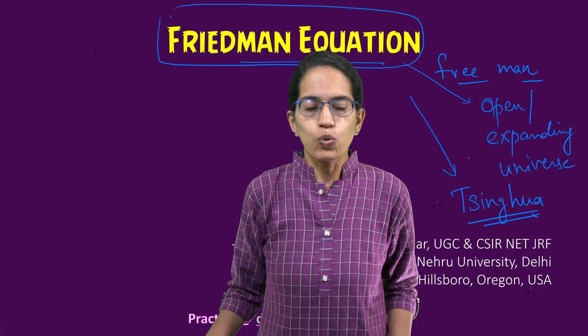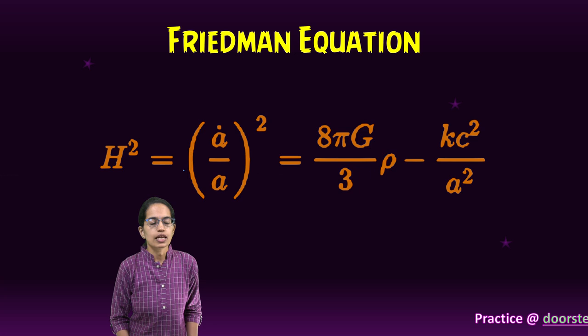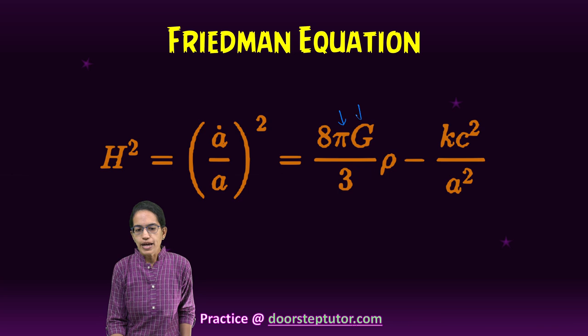Now, what is this Friedman equation? We'll understand this. This Friedman equation is a really interesting equation, which has two important versions, which has pi and gravitational constant that we are familiar with.